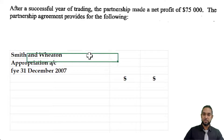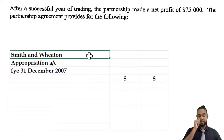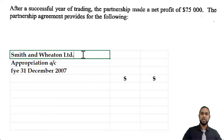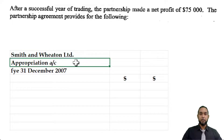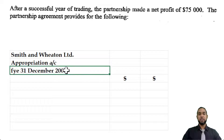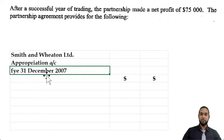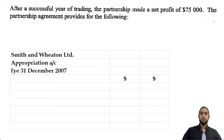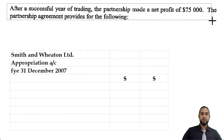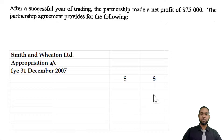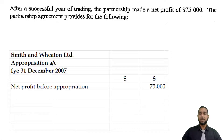Don't forget to head up your statement with the name of the entity — Smith and Wheaton Limited — then the appropriation account heading, or the full heading: profit and loss appropriation account, for the year ended 31st December 2007. The first thing we're going to put in is the net profit of $75,000, which the question gave us. Then we're going to add the interest on drawings.